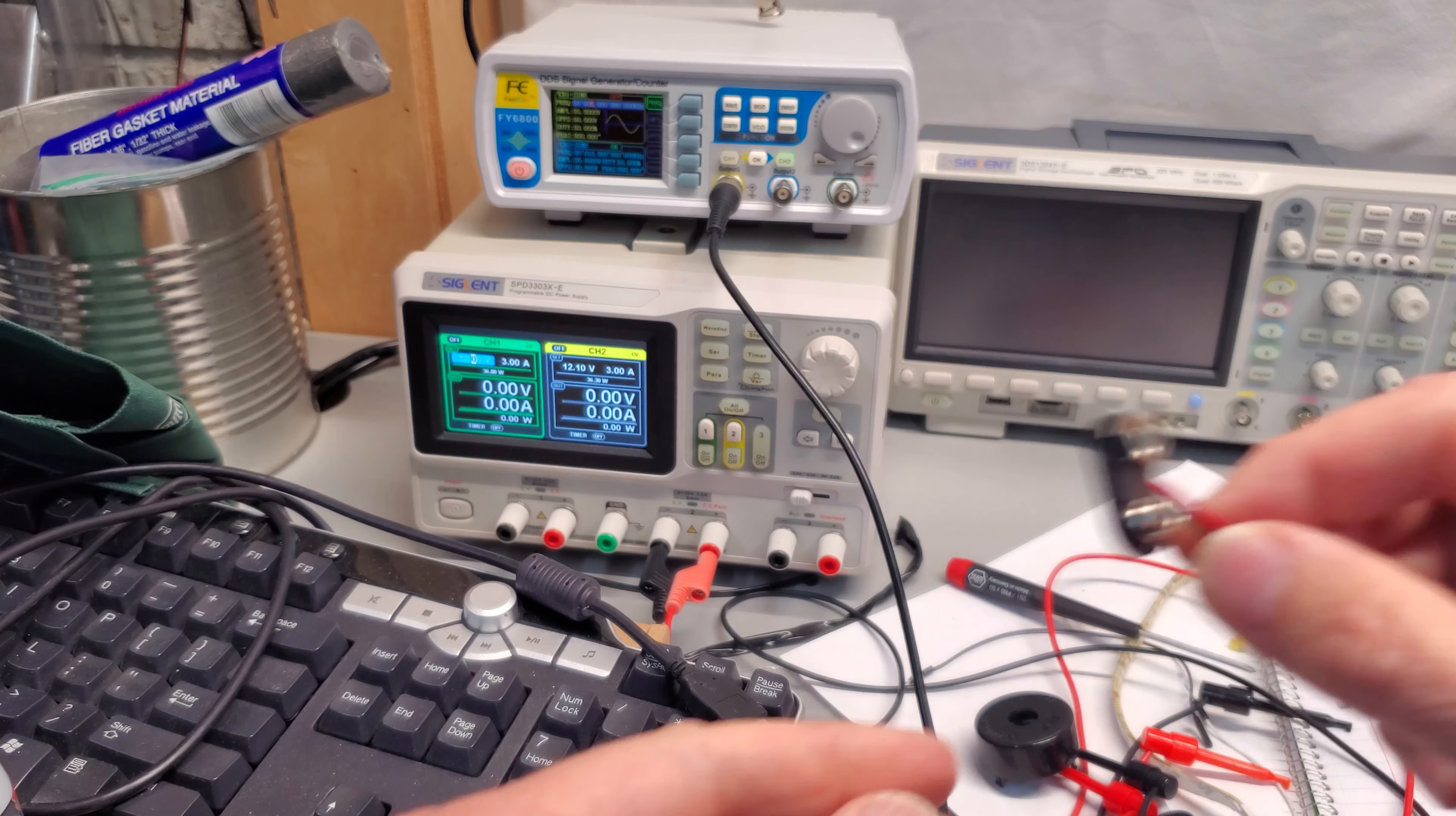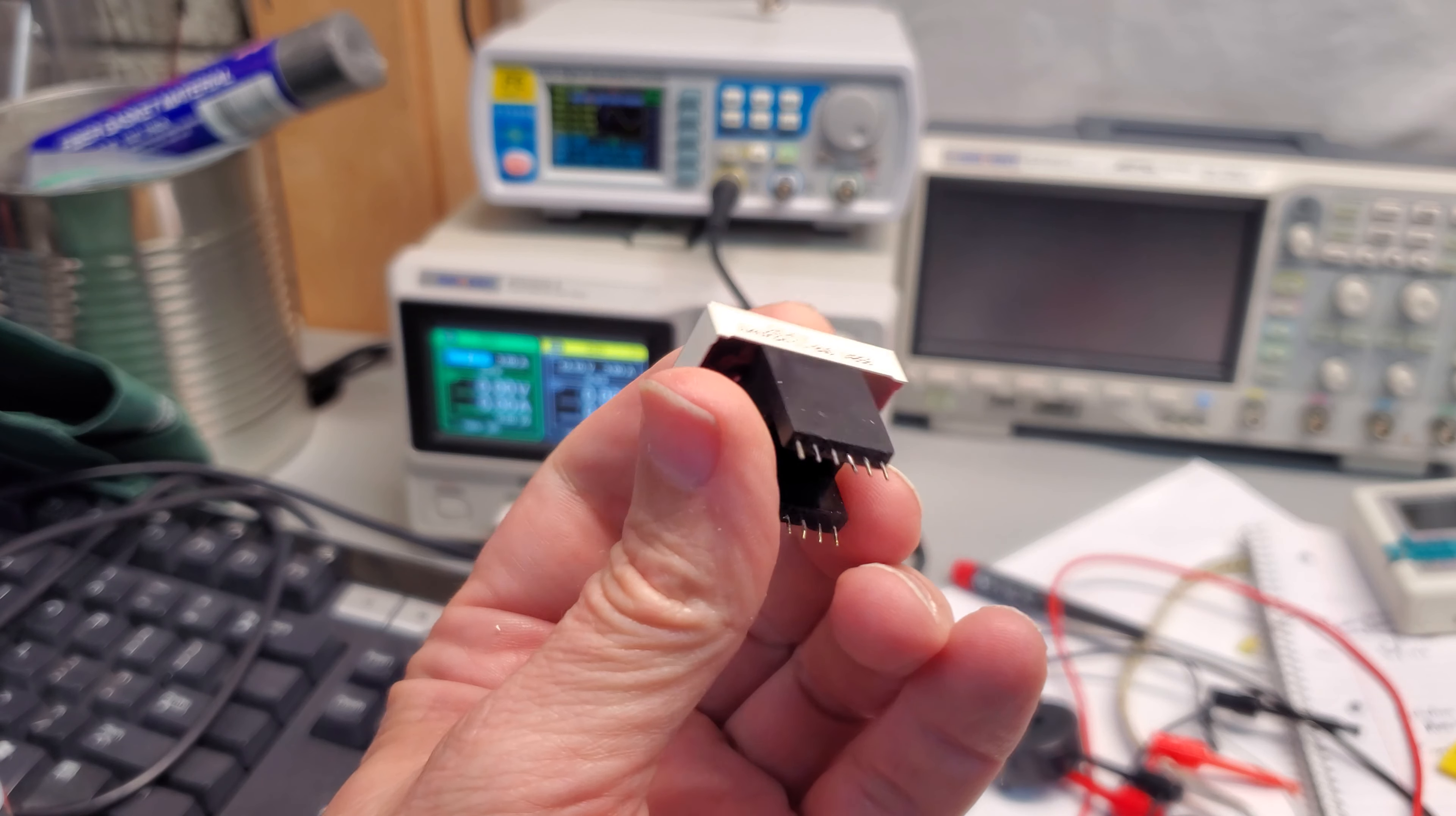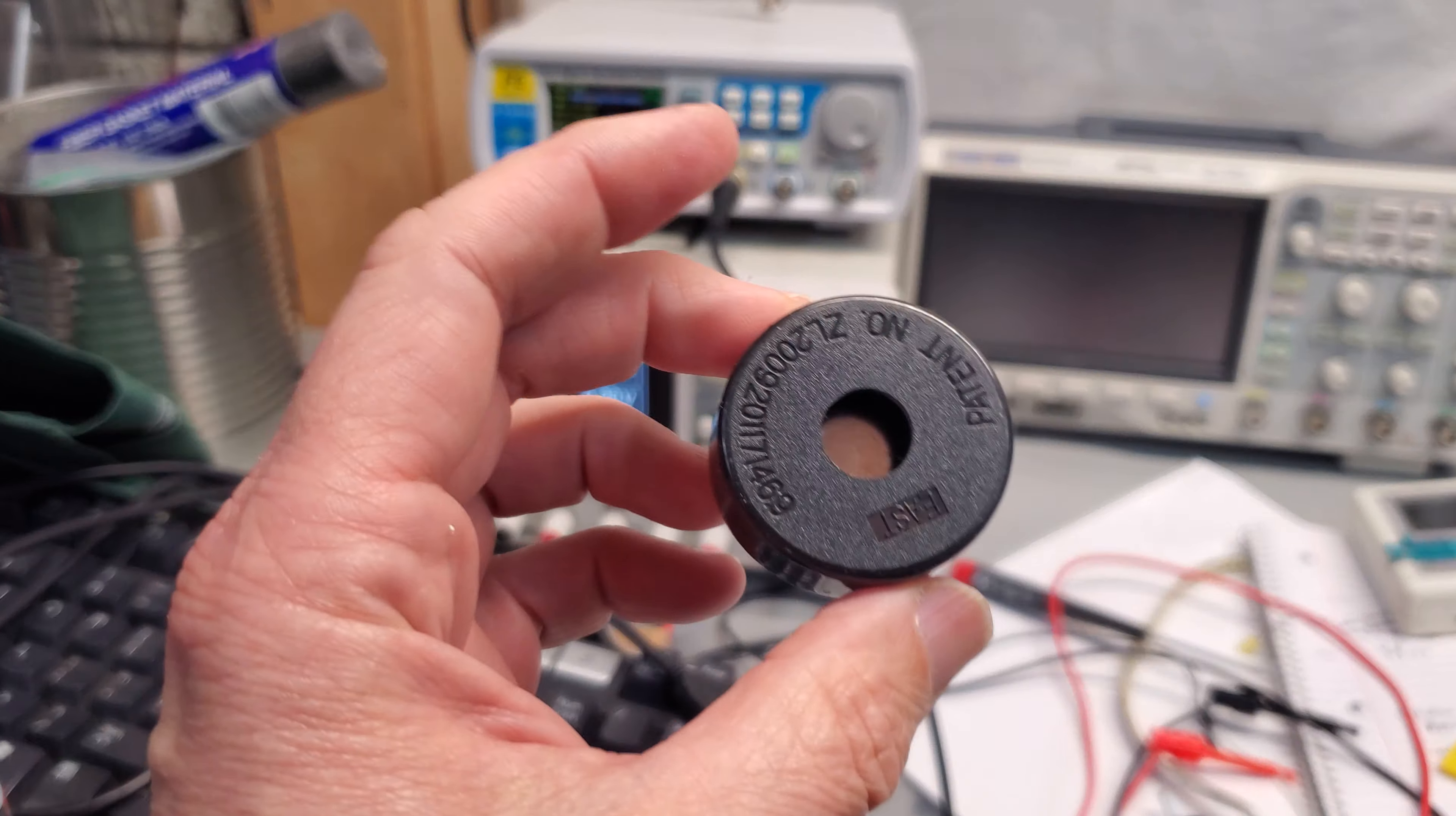So the parts that I harvested was the power supply, it's a 9 volt 250 milliamps but AC, so I'm not totally sure what I can use a 9 volt AC for. If you have any ideas leave a comment down there because I really don't have a clue.